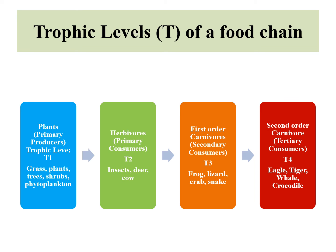for example, your lizards, frogs, snakes, and crabs, which are in turn eaten by your second order carnivores or tertiary consumers, which could be your eagles or tigers, whales, crocodiles, etc.